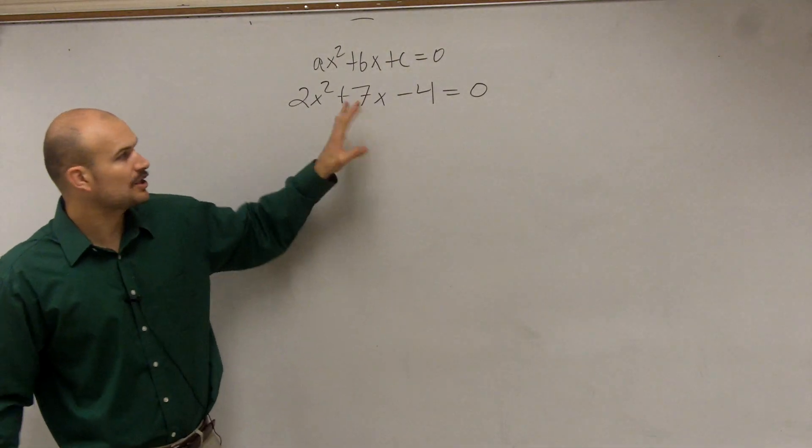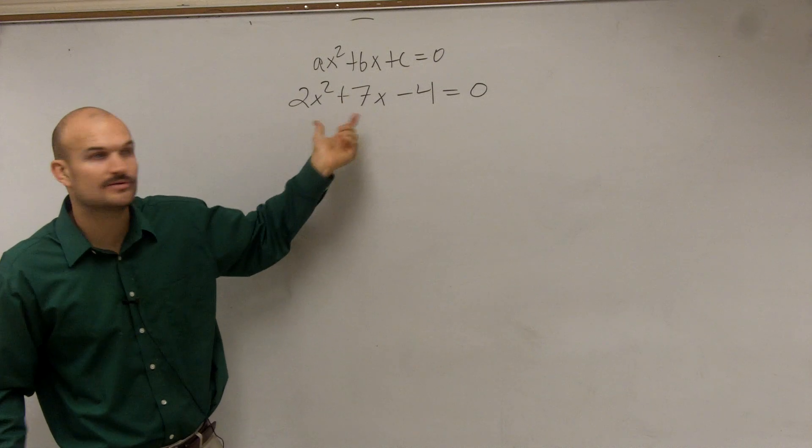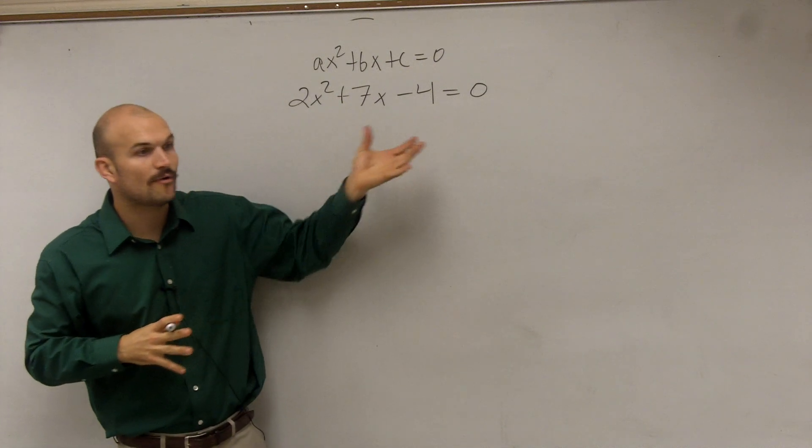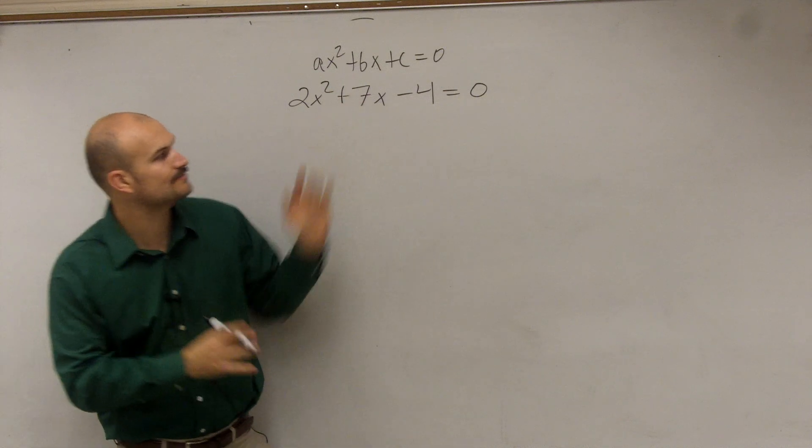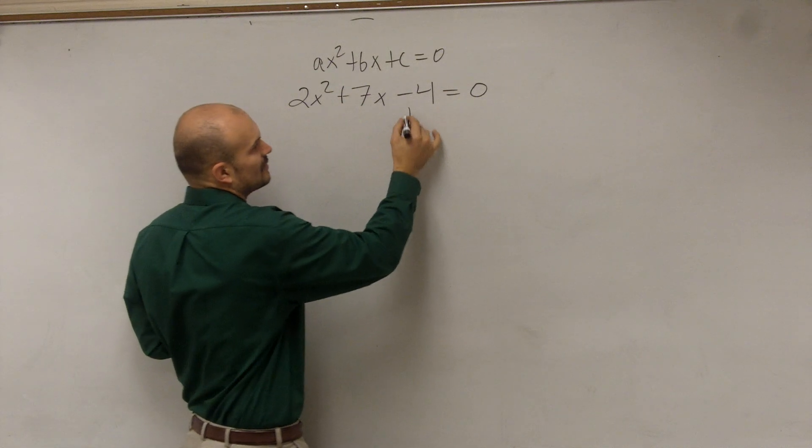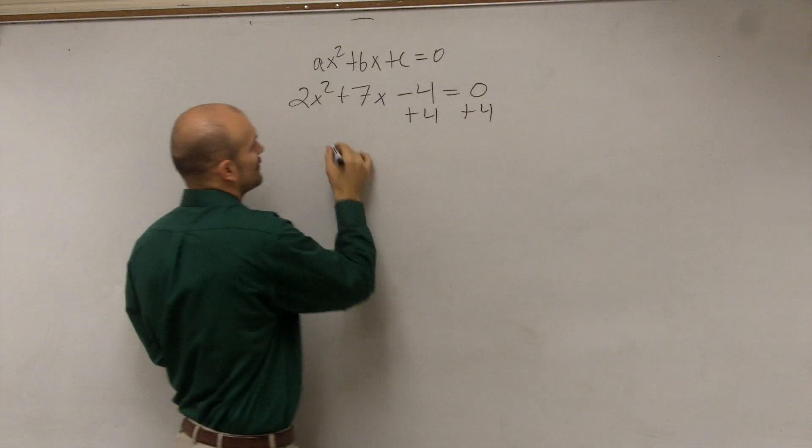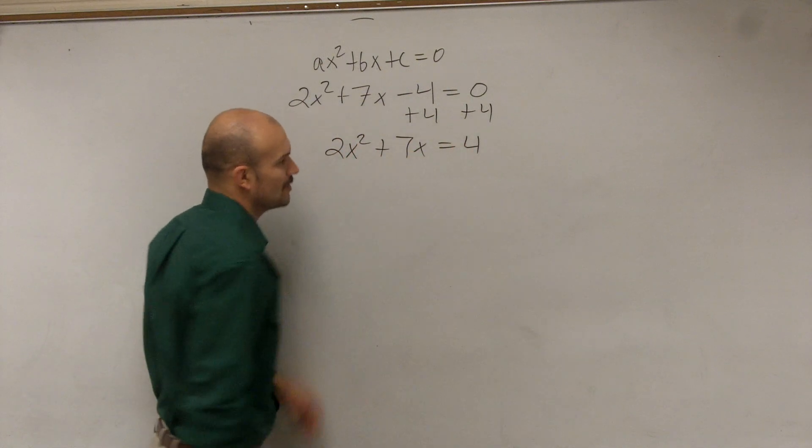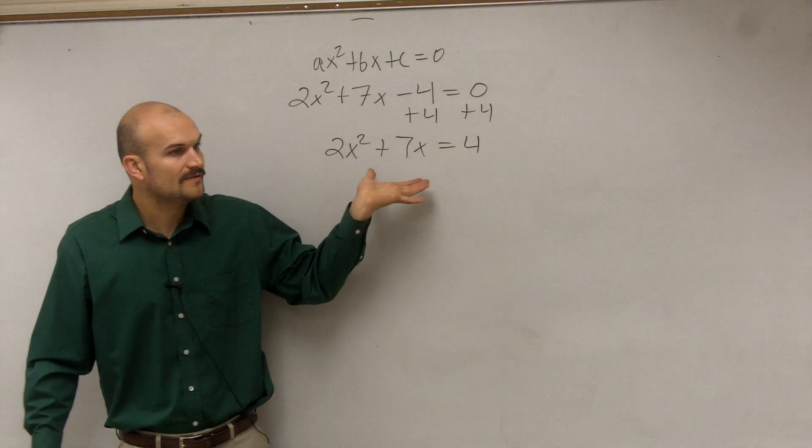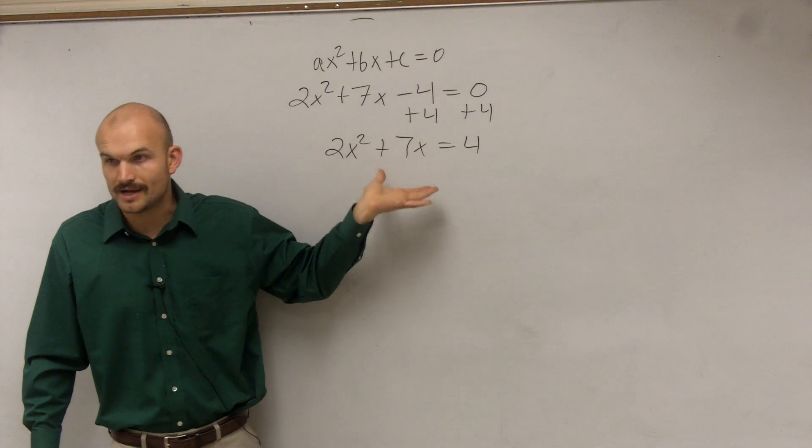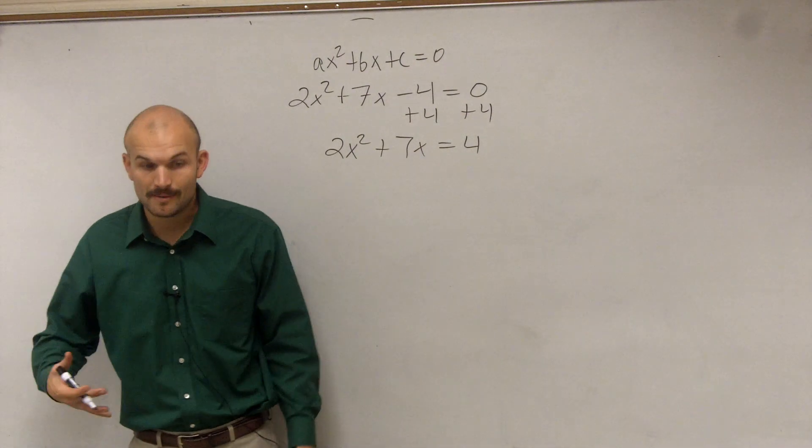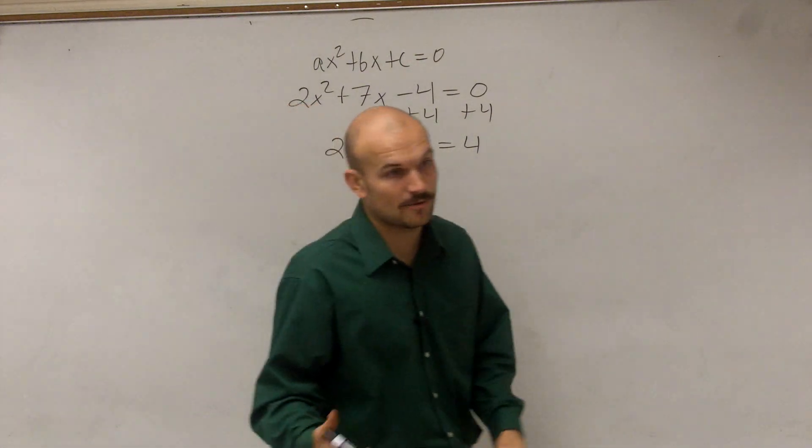So first of all, I need to create a perfect square trinomial. I'm going to do that on the left side. Well, first of all, before I even do that, I always want to actually, let's get this onto the other side. Because there's another way of teaching it, but I don't really like teaching it that way. So now we have our quadratic and linear term on the left side, and we have our constant on the right side.